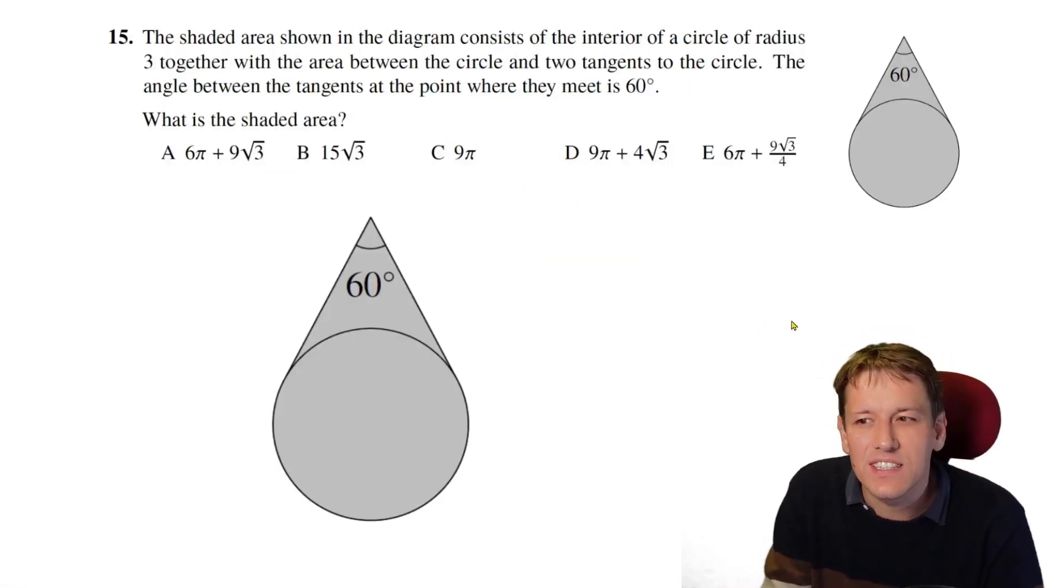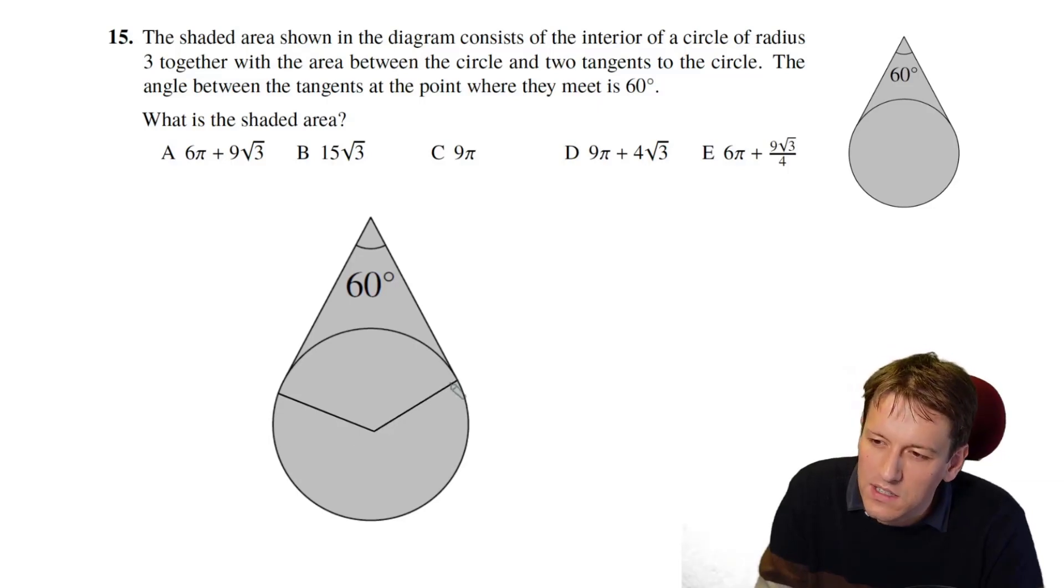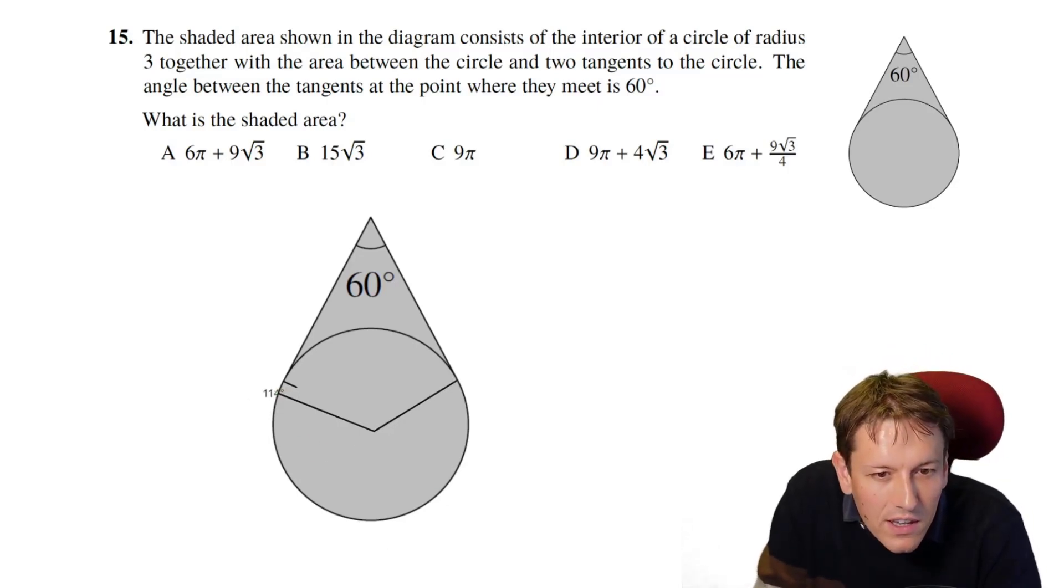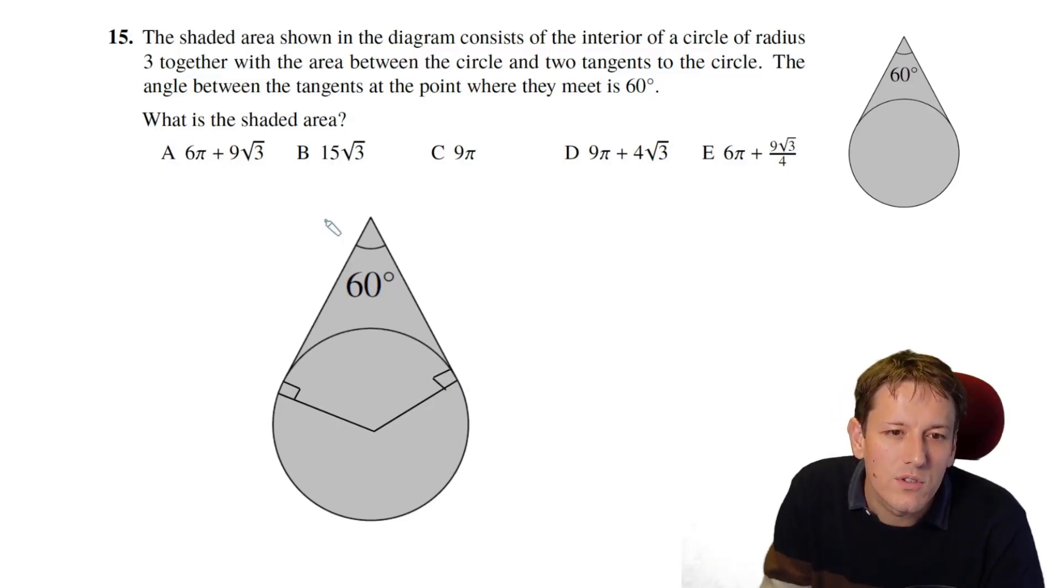So we've got this picture, and it says the shaded area in the diagram is the interior of a circle of radius 3 with this area between the circle and the two tangents to the circle. And the angle here is 60 degrees, and we want to work out the total shaded area. So the thing we should know about tangents is that they meet the radius to the circle at right angles here, and that's going to be really key to this question. And if I also draw a line down the middle here, that makes sense.